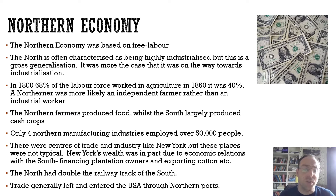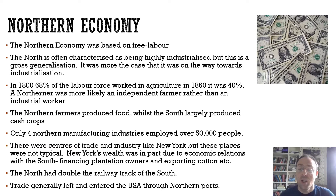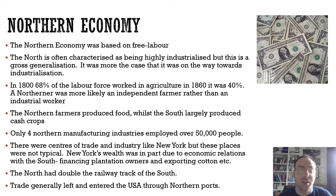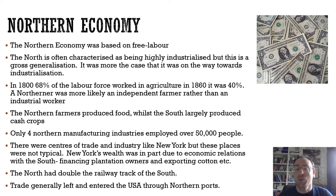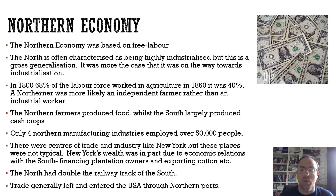About 68% of the workforce in 1800 worked in agriculture, and by 1860 this had dropped to 40%. So it wasn't a majority anymore by 1860, but it was through most of the first half of the 19th century. A northerner was far more likely to be an independent farmer than they were to be an industrial worker.